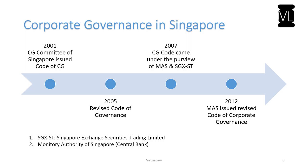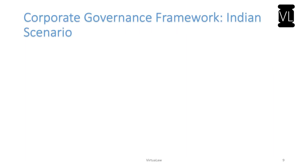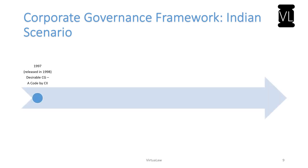With this we have finished the international perspective of corporate governance. Now let us look into the corporate governance framework in the Indian scenario. In 1997, a document called 'Desirable Corporate Governance Code' was released by CII — the Confederation of Indian Industry — and formally published in 1998. It spoke about various issues such as the frequency of board meetings, board composition, and number of directorships. In 2000, the Kumar Mangalam Birla Committee was constituted, which led to the insertion of Clause 49 of the Listing Agreement.